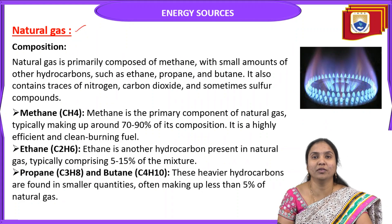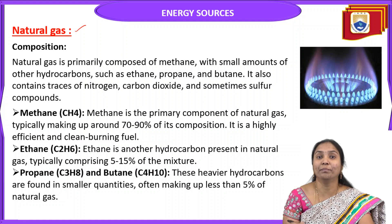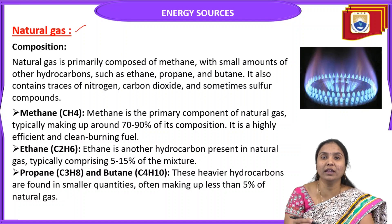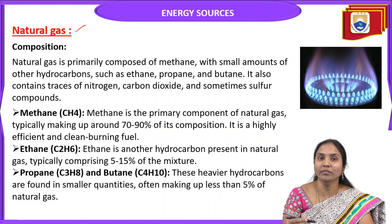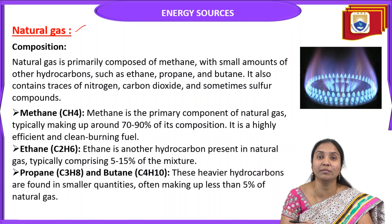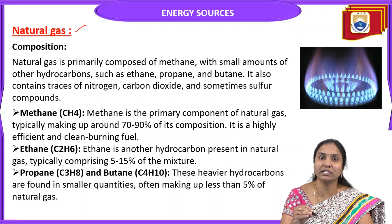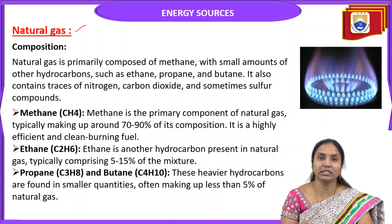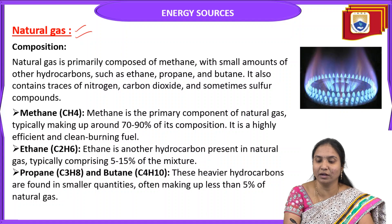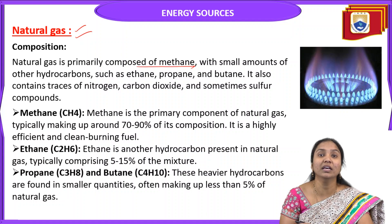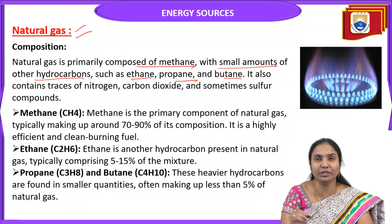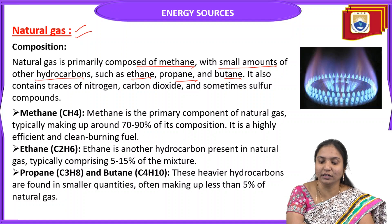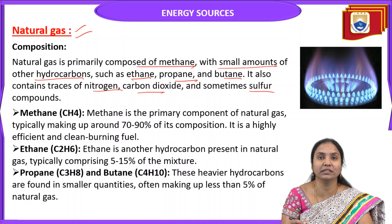Mainly we discuss about natural gas. Natural gas is the best example of a primary gaseous fuel. It is obtained from under the earth's crust. The plants and animal materials buried under the earth's crust for millions of years in the absence of air convert to fossil fuels. Based on physical state, we divide into three types: solid, liquid, gaseous. In this gaseous fuel, we discuss natural gas.